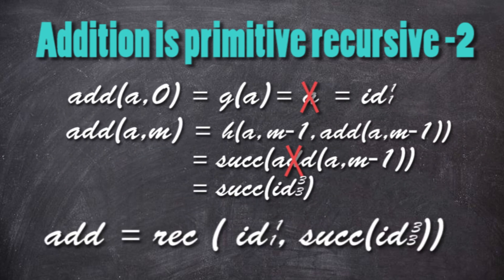Finally, the addition is the recursion of id₁¹ and successor of id₃³, and it's primitive recursive.